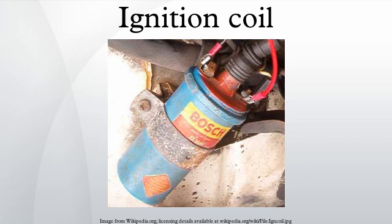Modern Ignition Systems: In modern systems, the distributor is omitted and ignition is instead electronically controlled. Much smaller coils are used, with one coil for each spark plug or one coil serving two spark plugs. A large ignition coil puts out about 40 kilovolts, and a small one such as from a lawnmower puts out about 15 kilovolts. These coils may be remotely mounted or placed on top of the spark plug. Where one coil serves two spark plugs, it is through the wasted spark system.